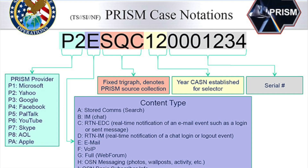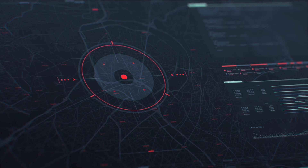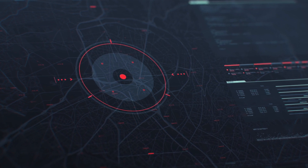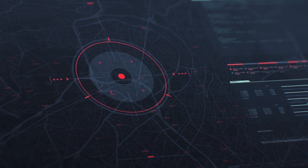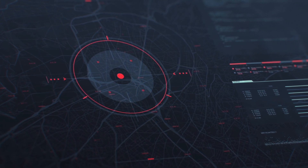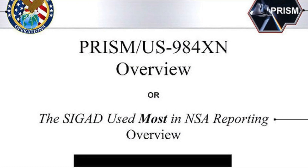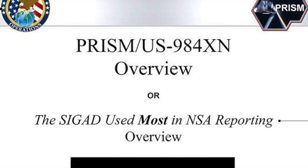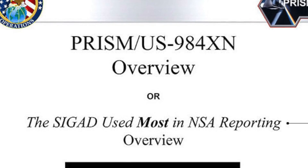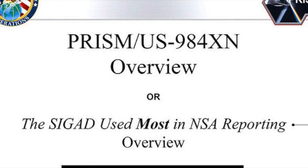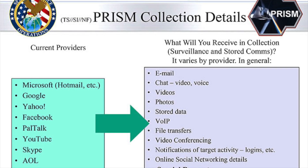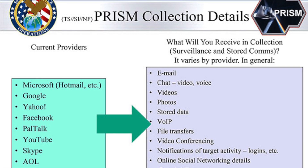Google released a blog post which stated: We have not joined any program that would give the U.S. government or any other government direct access to our servers. The U.S. government does not have direct access to the information stored in our data centers. We had not heard of a program called PRISM until yesterday. We provide user data to governments only in accordance with the law. Our legal team reviews each and every request, and frequently pushes back when requests are overly broad or don't follow the correct process. Press reports that suggest that Google is providing open-ended access to our users' data are false.